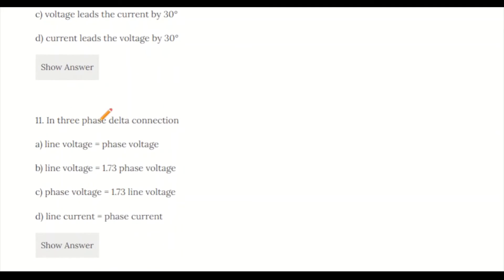Question 11: In a 3 phase delta connection, which is correct? a) line voltage equals phase voltage, b) line voltage equals 1.73 times phase voltage, c) phase voltage equals 1.73 times line voltage, d) line current equals phase current. The correct answer is option A, line voltage equals phase voltage. In delta connection, the phase voltage is the same as line-to-line voltage.